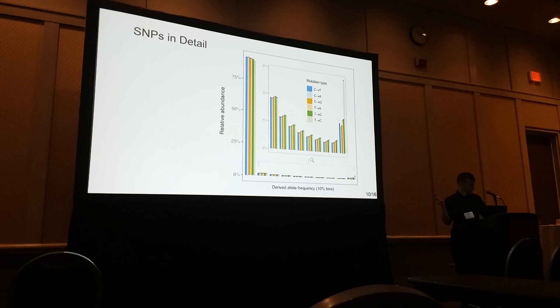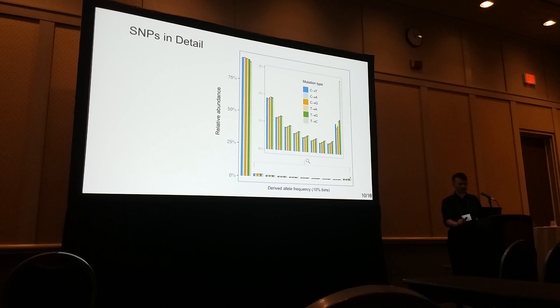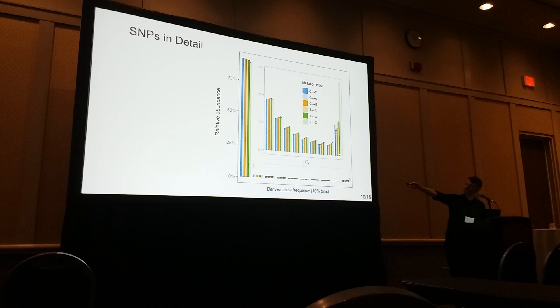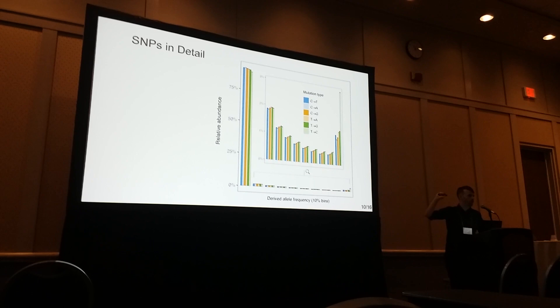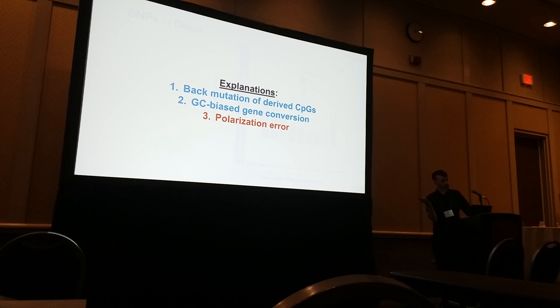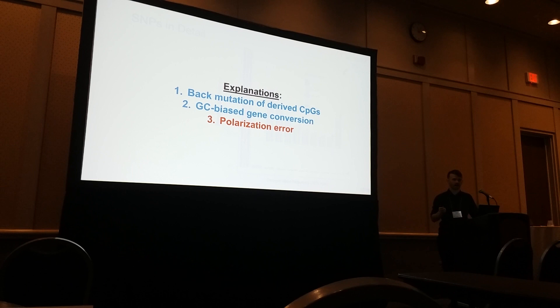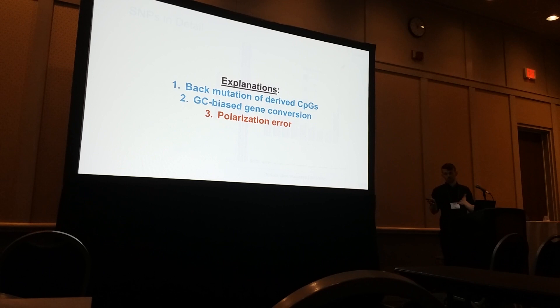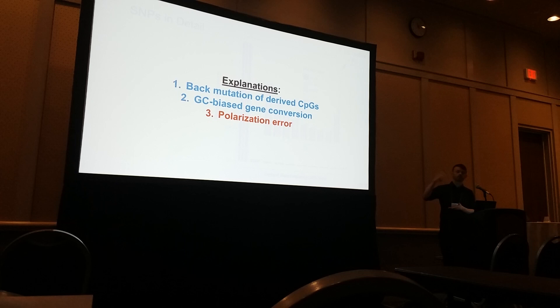We also wanted to look at SNPs in more detail. There's a conspicuous part of the chart on the right, at the very highest derived allele frequency bin — SNPs at derived frequencies of 90 to 100%. There is a huge T-to-C spike. That spike represents three percent of all T-to-C SNPs at the highest frequency bin. We thought of at least three explanations. The first is that this could be due to back mutation of derived CpG sites: if a T-to-C mutation fixes, a fraction of those probably created CpG sites, which are hypermutable, so those will back-mutate into the highest DAF bin of the SNP spectrum.